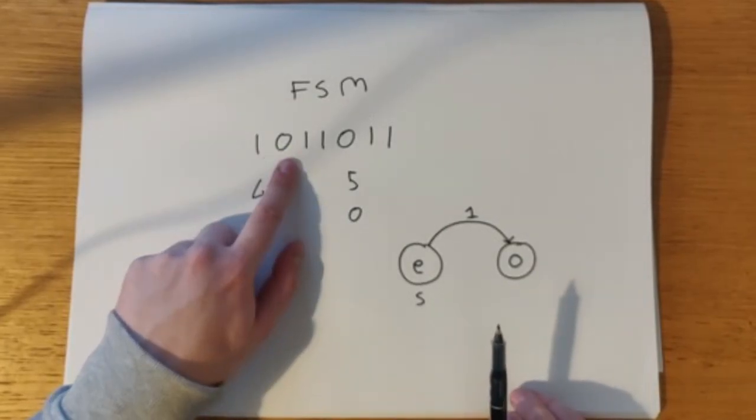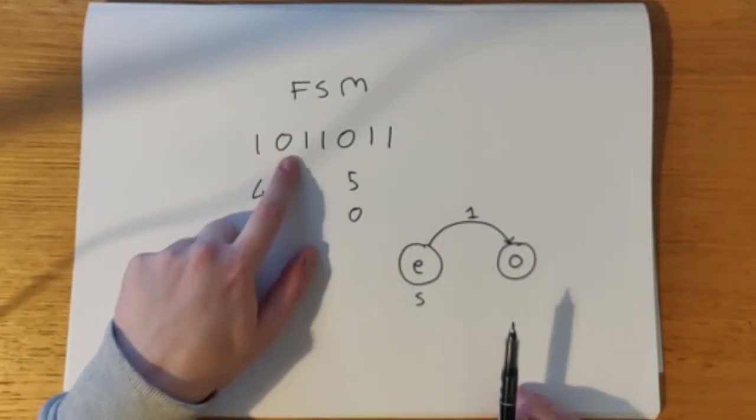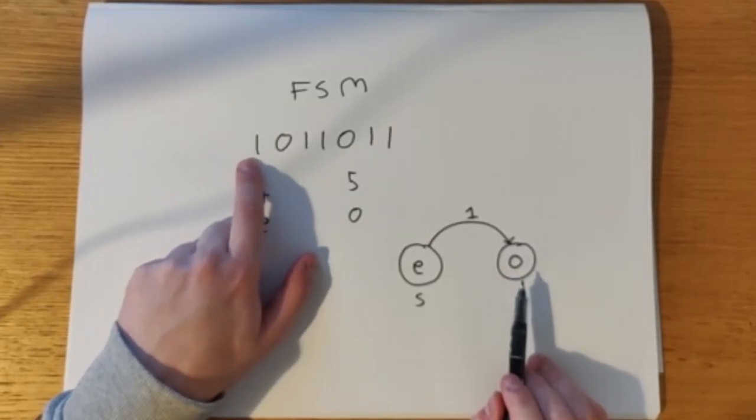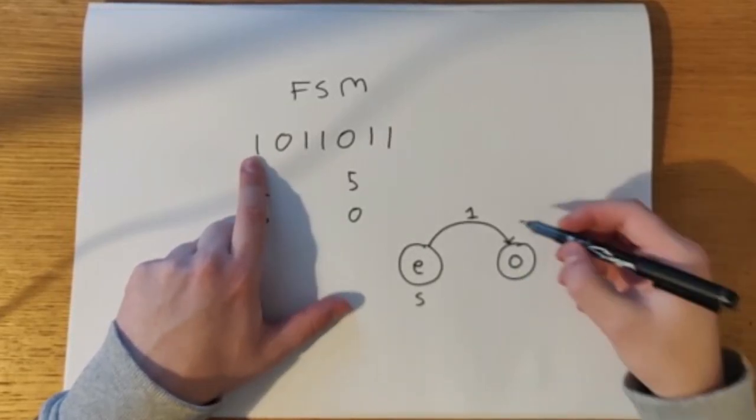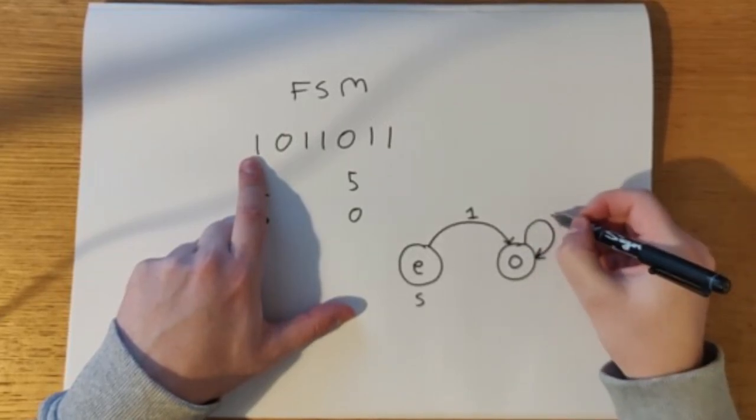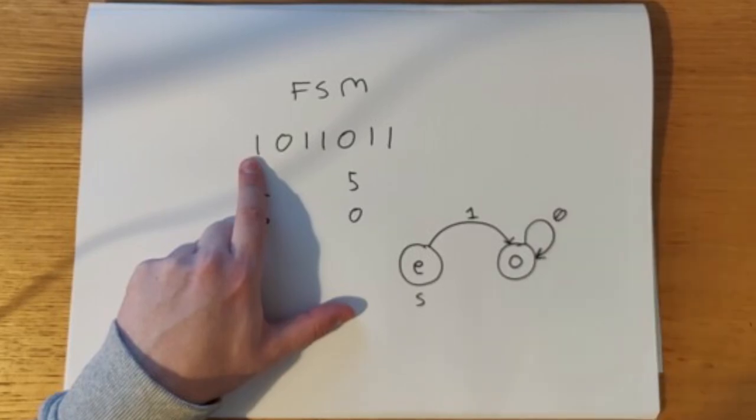However, if we receive a 0, what do we do? Well, if we have a 1 and then a 0, we're still in the same odd state because there's still an odd number of 1s. So what we do is we remain in that state. And we represent that by drawing a line to itself with the number 0.